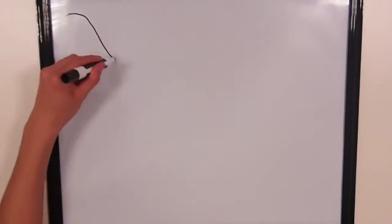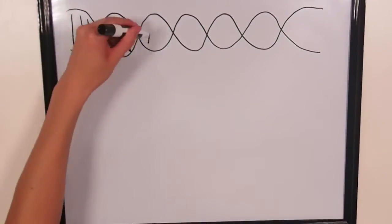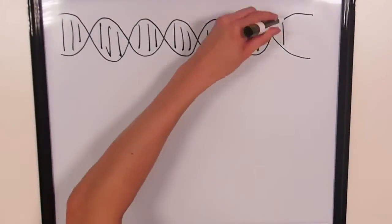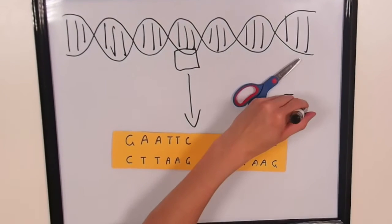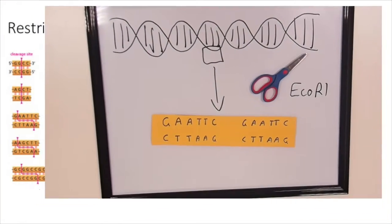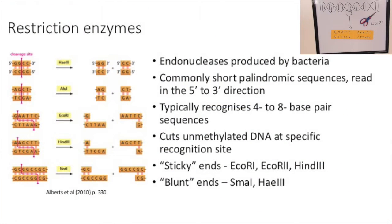Once your sites have been identified, select appropriate restriction enzymes that will cut the DNA only at the sites chosen. Restriction enzymes are endonucleases produced by bacteria that typically recognise 4-8 base pair sequences. They cut unmethylated DNA at specific recognition sites, leaving sticky or blunt ends.